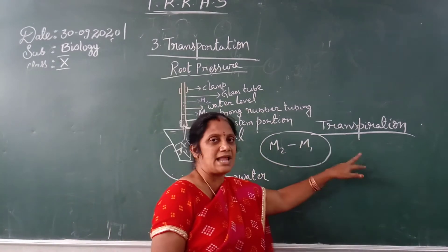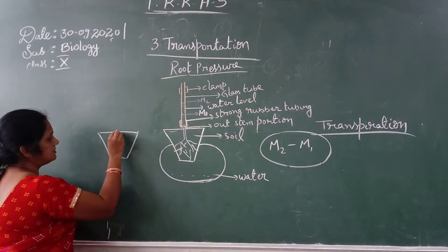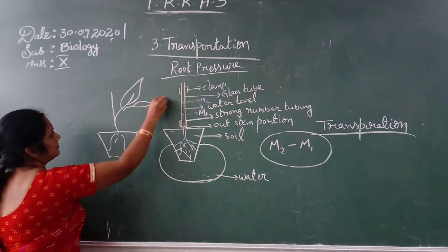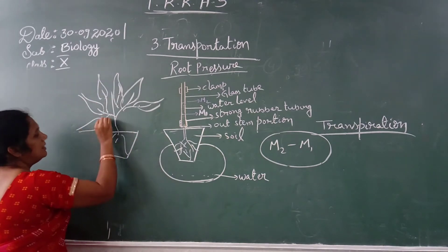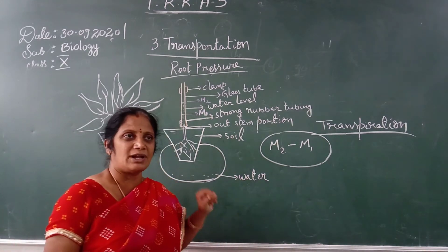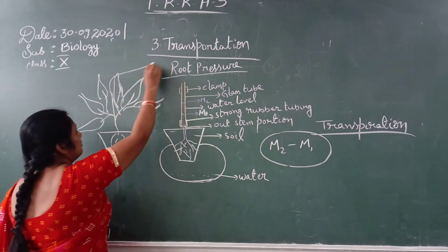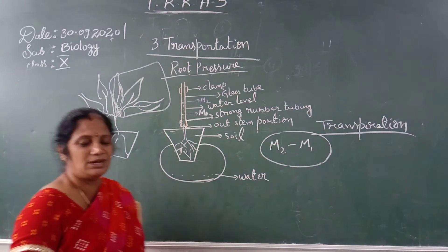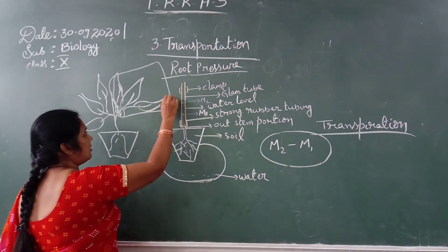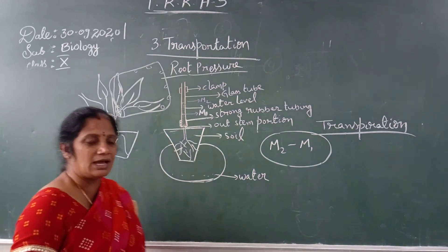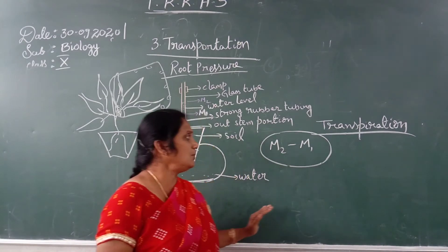To demonstrate transpiration, take a healthy rooted plant and a transparent polythene cover. Tie the polythene cover to one branch and leave it for one to two hours. After one to two hours, you will observe water droplets inside the polythene cover. This proves that the plant transpires — water vapor comes out from the leaves.